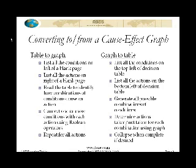And then what you're going to do is you're going to go action by action. You're going to read the top of the table, and you're going to look at how the combinations of actions, excuse me, the combination of conditions to cause or don't cause the actions. And you use those Boolean operators that I showed you to make the connections and repeat that for all the actions, and then you're done.